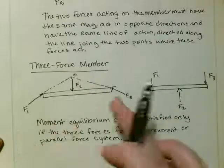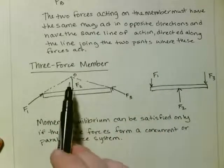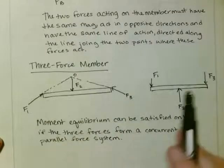So these three are concurrent because their line of actions all meet up at point O. And these are parallel. So these are two examples of a three-force member.